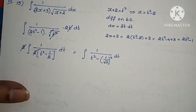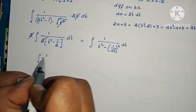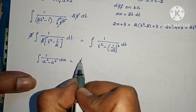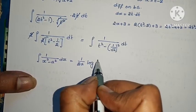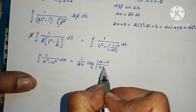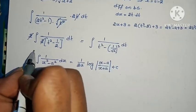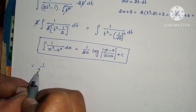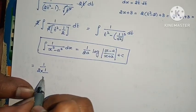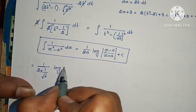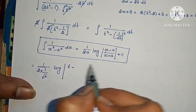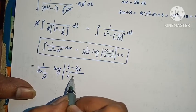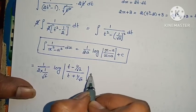The square root cancels, giving us 1 by (t squared minus (1/√2) squared) dt. This matches the standard formula: integral of 1 by (x squared minus a squared) dx equals 1 by 2a times log mod (x minus a) by (x plus a) plus c.